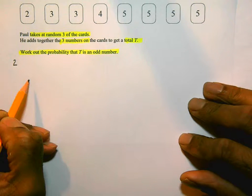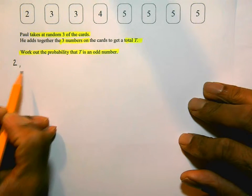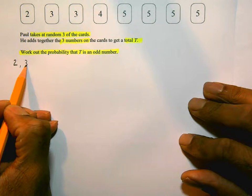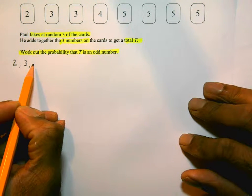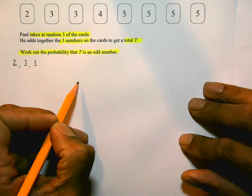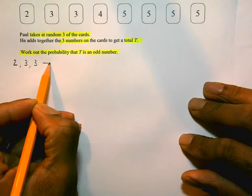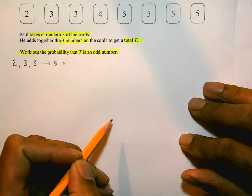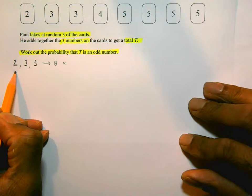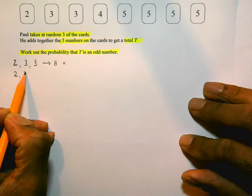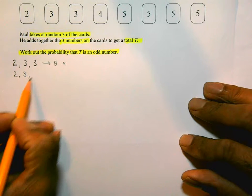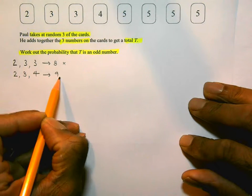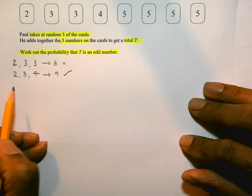So if he picks a 2 first, then the other possibilities he could pick include a 3 or a 3. That total would add up to 8, which is even, so that's not one we want. If he picks a 2 first and a 3 second, he could pick a 4 third. 2 + 3 + 4 = 9, which is odd, and that's one we are interested in.